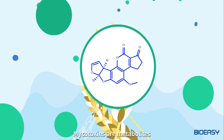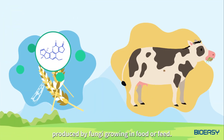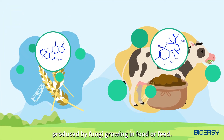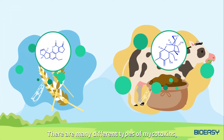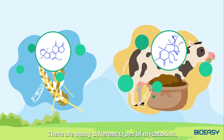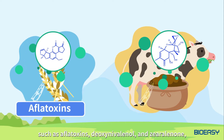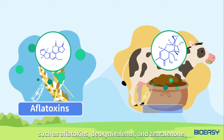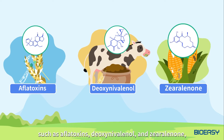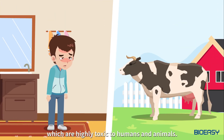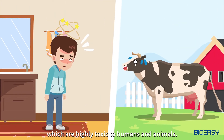Mycotoxins are metabolites produced by fungi growing in food or feed. There are many different types of mycotoxins such as aflatoxins, deoxynovalanol, and xyralanol, which are highly toxic to humans and animals.